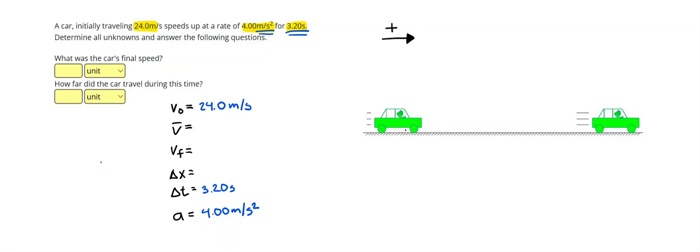So next thing I can do is I can find the final velocity using initial velocity plus acceleration times time. So, 24 plus 3.2 times 4 gives me 36.8 meters per second. And that's going to be our first answer.